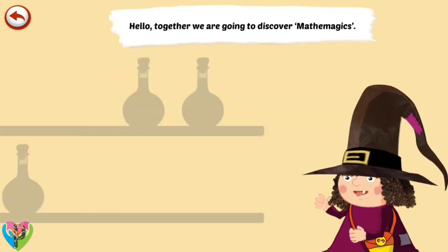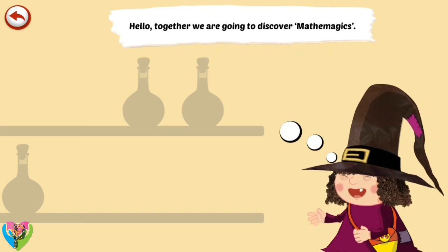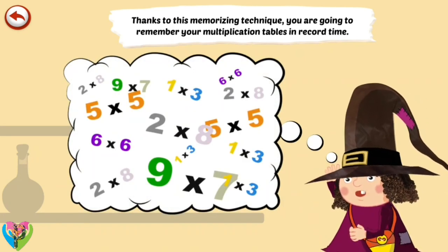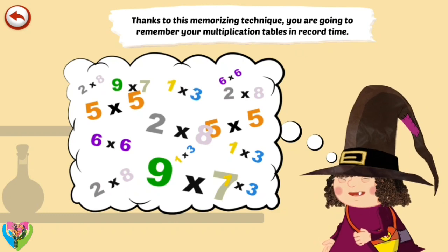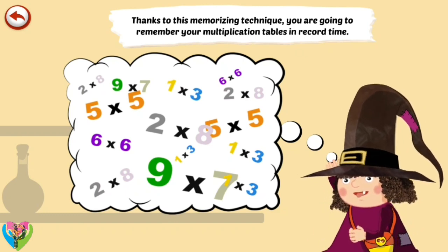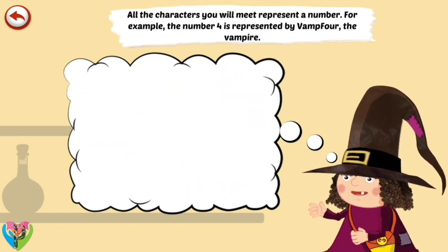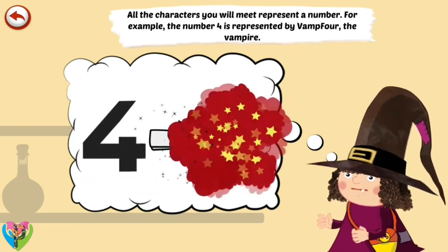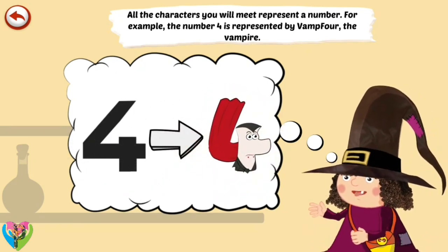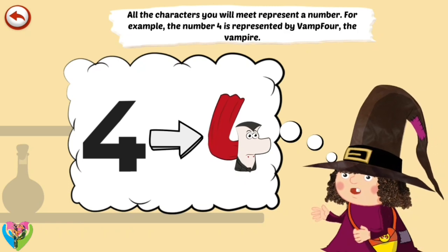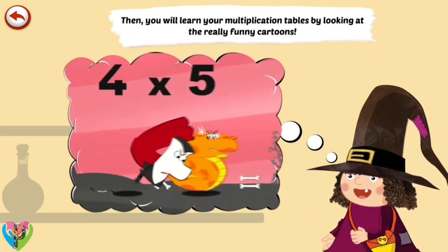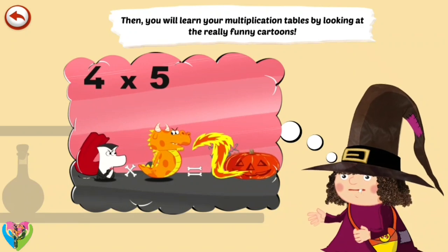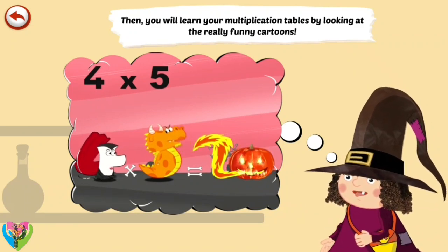Hello! Together we are going to discover Mathemagics. Thanks to this memorising technique, you are going to remember your multiplication tables in record time. All the characters you will meet represent a number. For example, the number 4 is represented by Vamp4, the vampire. You will learn your multiplication tables by looking at the really funny cartoons.